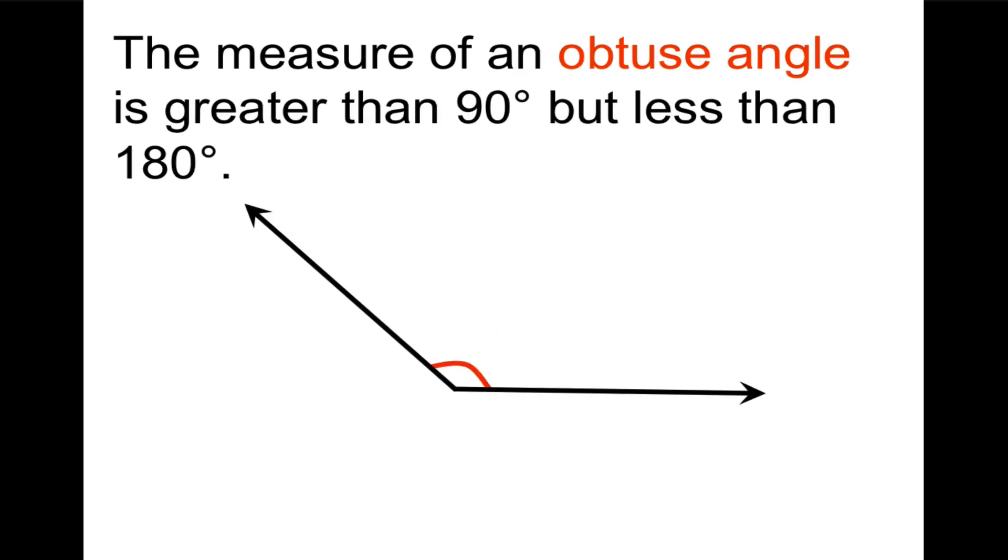An obtuse angle is greater than 90 degrees but less than 180. Obtuse can translate as dull. So that's greater than 90 but less than 180. You can see that that one is not very sharp.